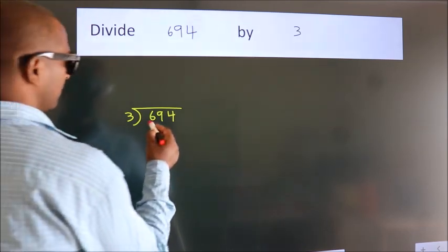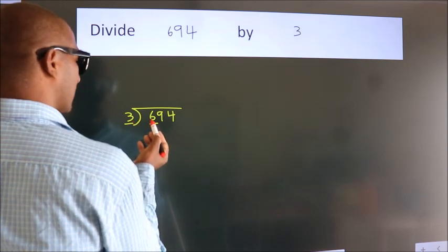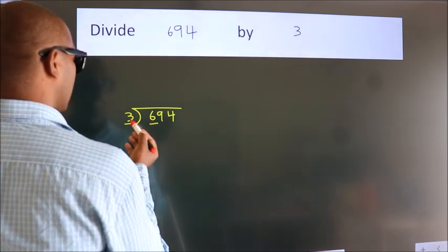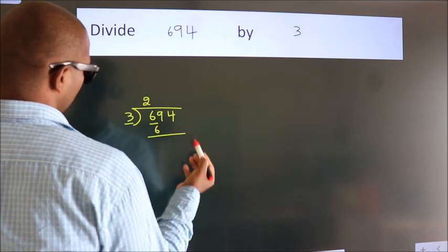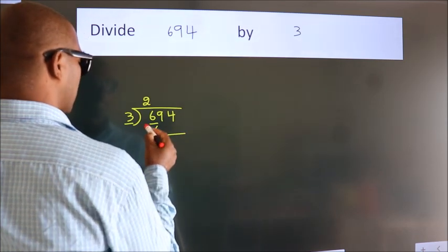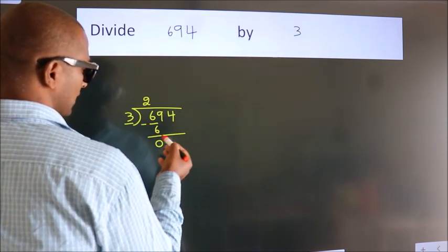here we have 6, here 3. When do we get 6? In 3 table, 3 2s, 6. Now we should subtract, we get 0. After this,